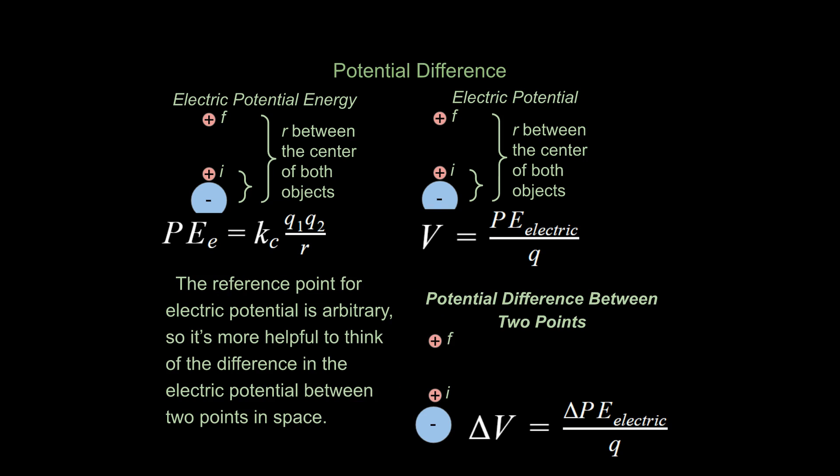Now, an even more useful concept, if we take it one step further, is if we find the difference in electric potential between two points. So we have a point right here, our initial point, and our final point right here. We could say that's our potential difference between these two points, and what's different with this equation and this equation down here, notice we just have the delta value over here.